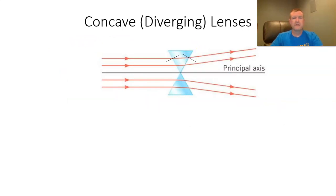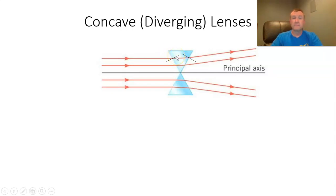Let's talk about the diverging lens — the concave lens — first. Imagine two prisms stacked on top of each other with light rays coming in parallel. When a light ray goes from air to the prism — which is glass or plastic — it's going to refract and obey Snell's law. Going from a faster medium to a slower medium, it bends toward the normal line. Then when it goes from the slower medium to the faster medium, it bends away from the normal line. It bends twice — once when it enters and once when it leaves — both times bending away from the principal axis, giving you that diverging of light.